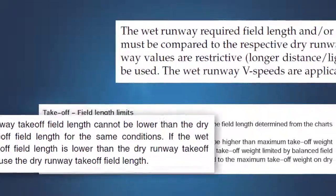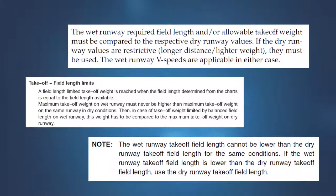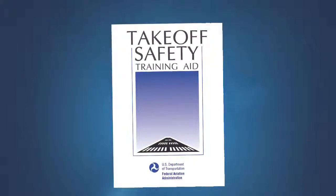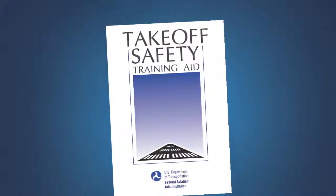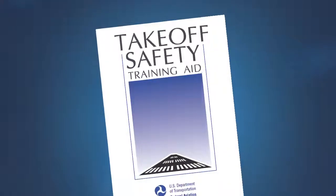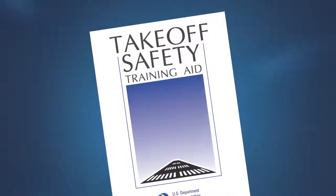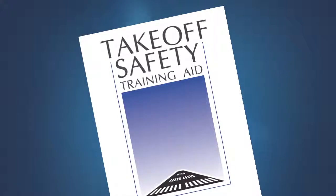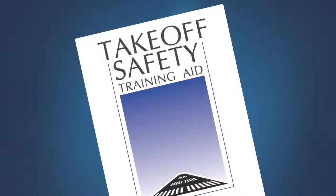Users are advised to check the distances required or takeoff weight limits determined on a wet runway against those for a dry runway condition and to use the most restrictive distance or weight limit. In some instances, the airport analysis furnished will incorporate this dry check; however, users should verify this feature with their performance engineering services provider for their aircraft. Pilots of transport category airplanes should also be familiar with the takeoff safety training aid, which aims to reduce the frequency of rejected takeoff accidents through improved pilot knowledge and awareness. The takeoff safety training aid may be viewed at the FAA's airline operator training website.